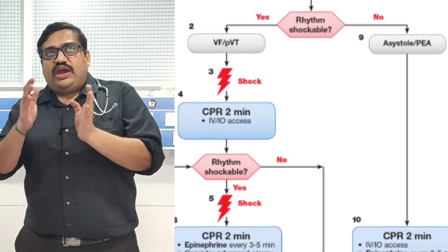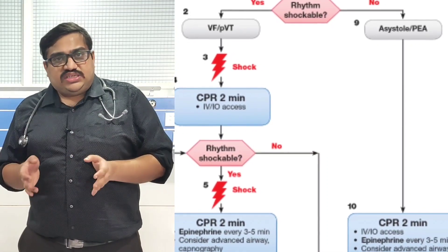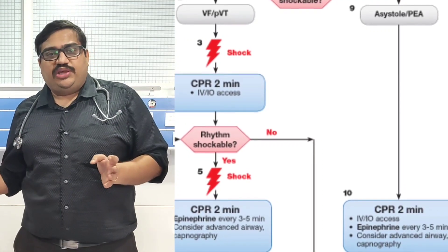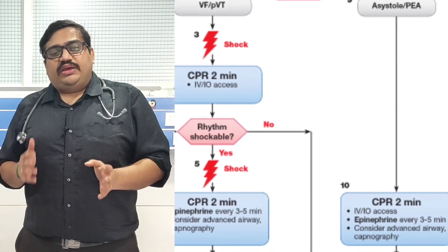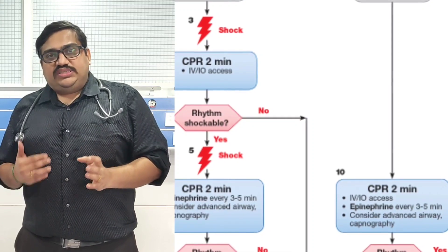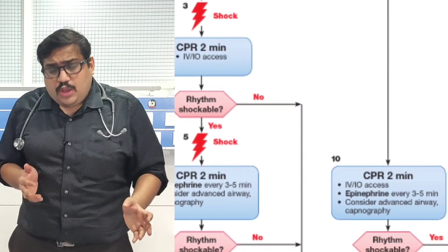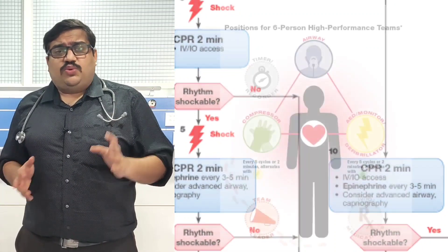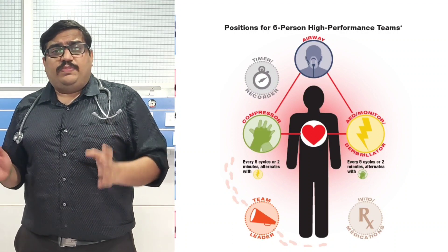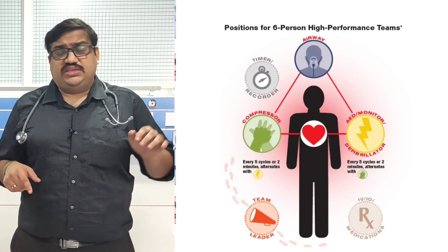We are discussing asystole. The patient has arrived, you found cardiac arrest, initiated CPR, and attached the defibrillator — finding a non-shockable rhythm. During this megacode, make sure your cardiac arrest team is ready with roles assigned: one for airway, one for defibrillation, one for compressions, one for IV access, one to document, and one as team leader.